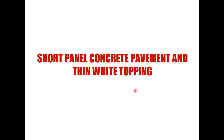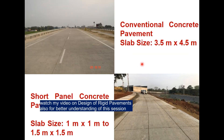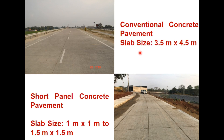Today we will discuss short paneled concrete and thin white topping. When a concrete overlay is provided on an existing bituminous surface, it is called white topping. In case of a conventional concrete pavement, the slab size is generally 3.5 meter by 4.5 meter, whereas short paneled concrete pavement can have a slab size from 1 meter by 1 meter to 1.5 meter by 1.5 meter.